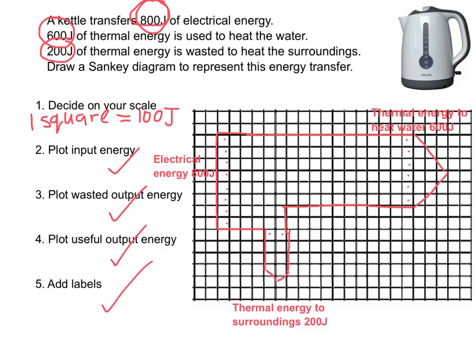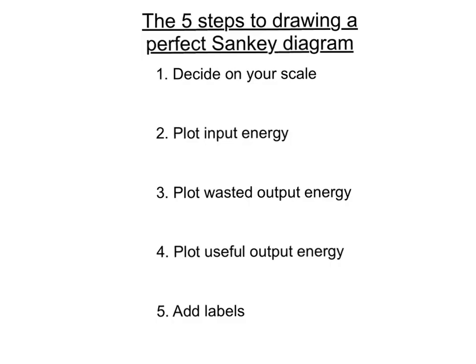So let's have a quick summary. The five steps to drawing the perfect Sankey diagram: First of all, decide on your scale. Secondly, plot the input energy. Thirdly, plot the wasted output energy. Then plot the useful output energy. And finally, add the labels.